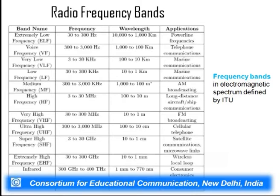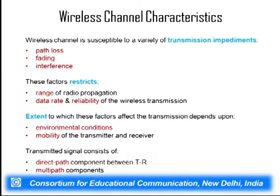These are the frequency bands available for wireless radio for different applications. For marine communication, two types of bands are available — very low frequency and low frequency. Similarly, we have AM broadcasting, FM broadcasting, cellular telephone, satellite telephone, etc. The highest frequency in the table is for visible light, used for optical communication. For different application demands we have different frequency bands, which helps in managing wireless radio in an efficient manner.